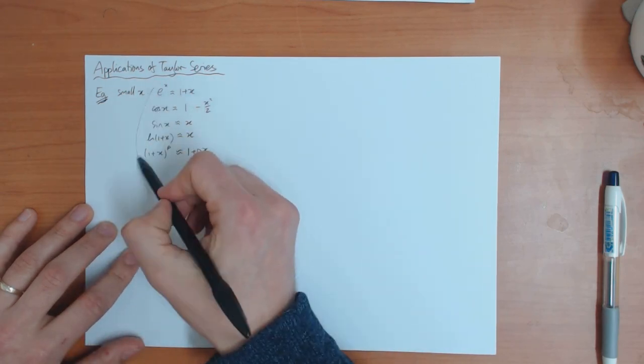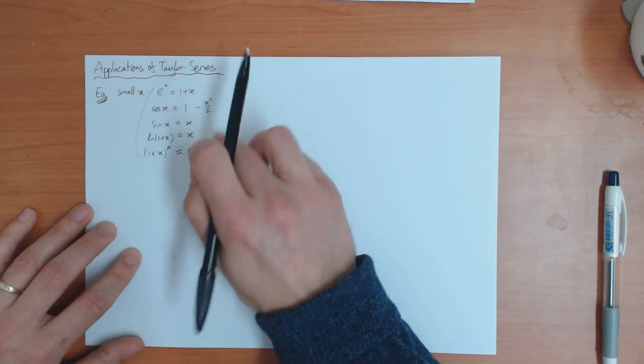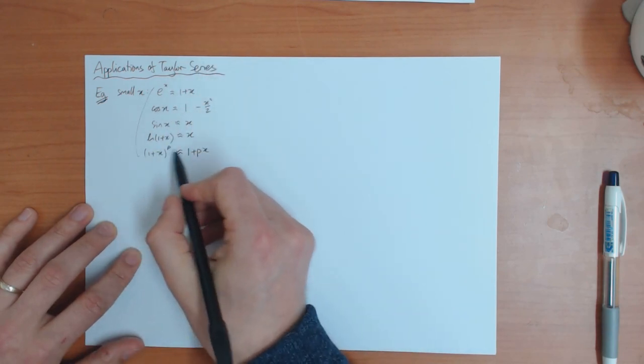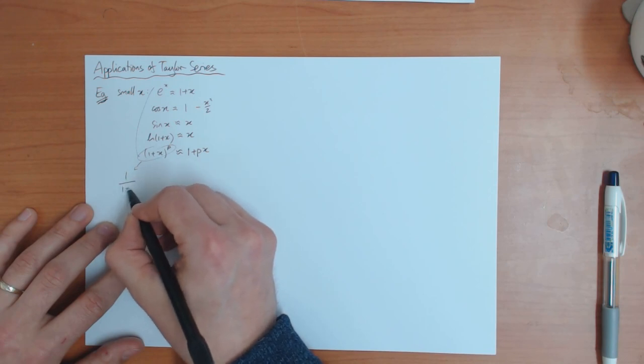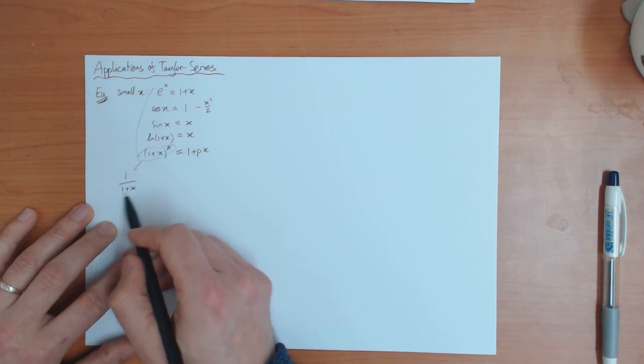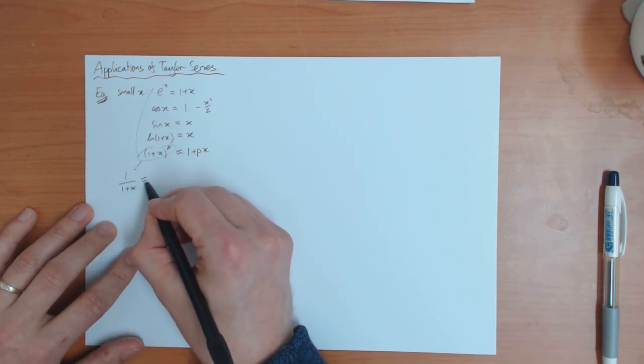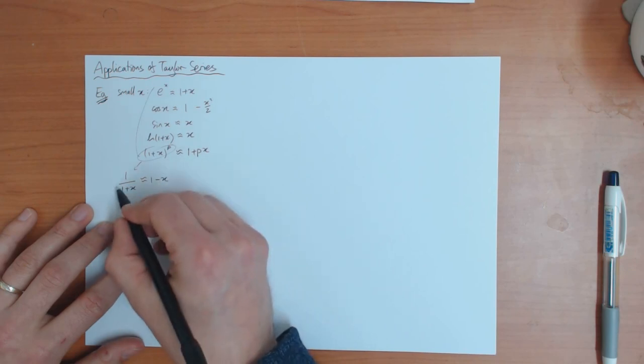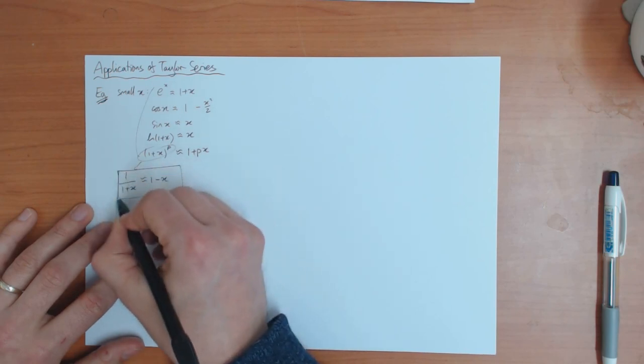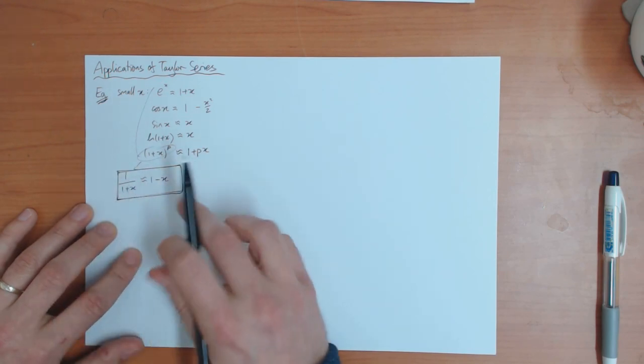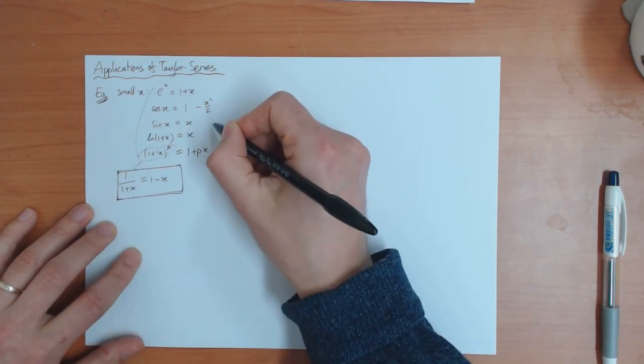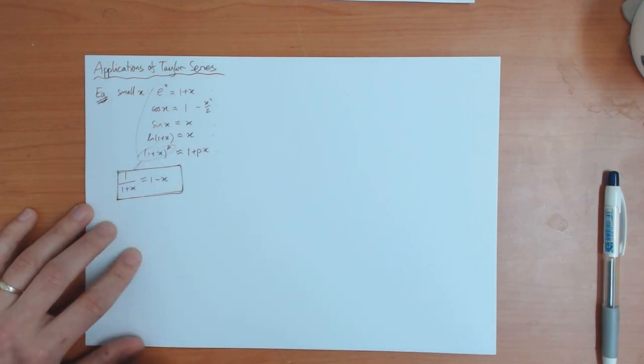And these formulas are all very useful. So again, it's a good idea to remember these. And a particular example of this last one is when p equals minus one. You get that one over one plus x is approximately one minus x. So this one is, I think, the thing that's used most often. But you do see examples of these quite frequently in physics.